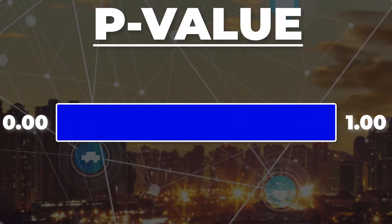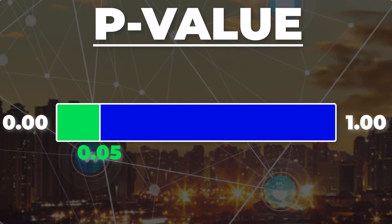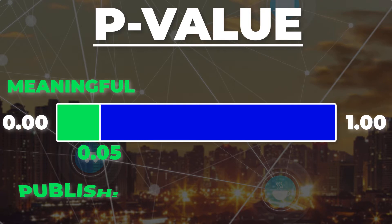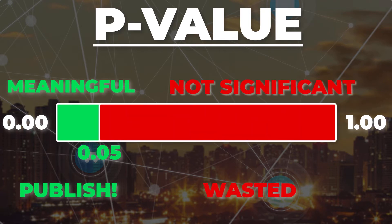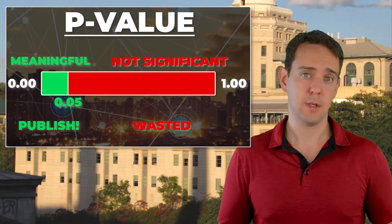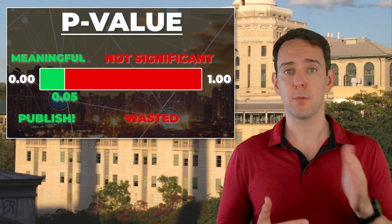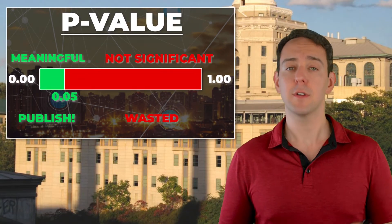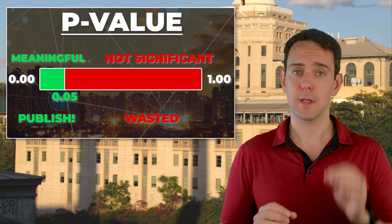In brief, researchers are motivated to get what's called a p-value to be below a threshold of 0.05. If they do that, their findings are considered meaningful and they can typically publish their results. If they don't, all their work is largely wasted. And to get those p-values below 0.05, there are some very dubious and unethical approaches that they can take.